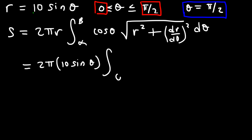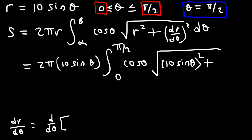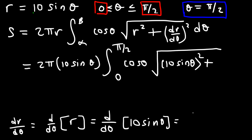So we're going to integrate from 0 to pi over 2. Then we have cosine theta times the square root of r squared — so r is still 10 sine theta, but this time we're going to square it — and then dr/dθ. So dr/dθ is the derivative of r with respect to theta. r is 10 sine theta, and the derivative of that is 10 cosine theta, so dr/dθ is 10 cosine theta.